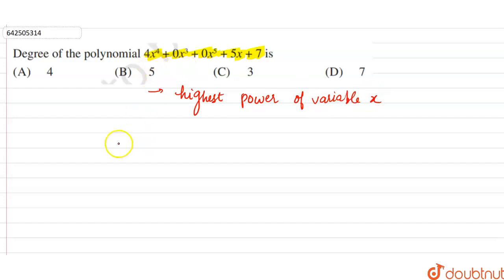So in this given algebraic expression 4x^4 + 0x^3 + 0x^5 + 5x + 7, here the first term is 4x raised to the power 4.